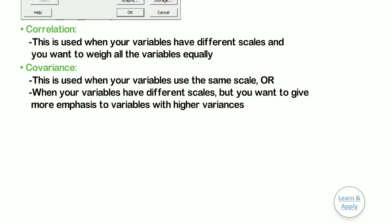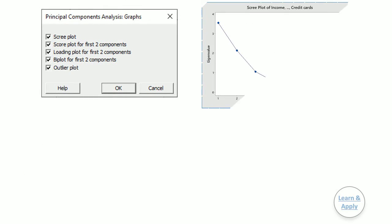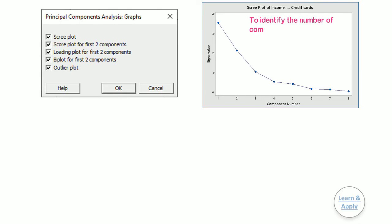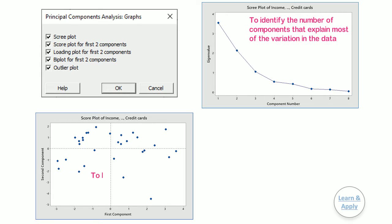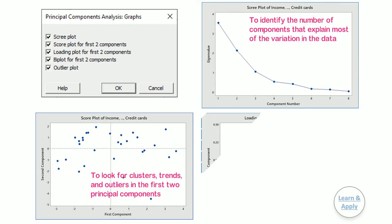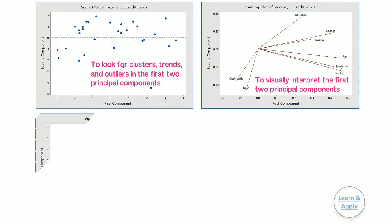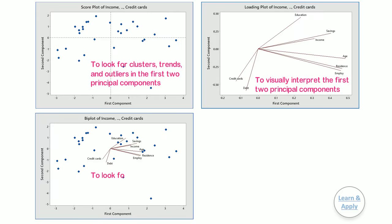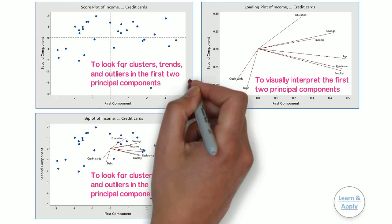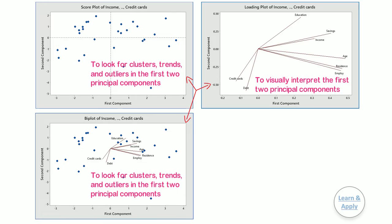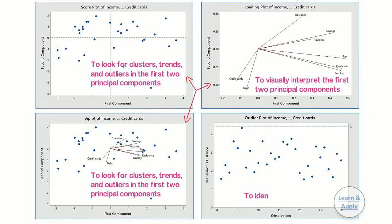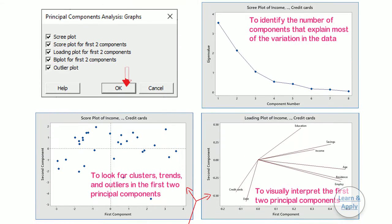Step 6: From the graphs, select the graphs you want to see for analysis. Scree plot: use a scree plot to identify the number of components that explain the most variation in the data. Score plot for the first two components: use the score plot to look for clusters, trends, and outliers in the first two principal components. Loading plot for the first two components: use the loading plot to visually interpret the first two principal components. Bi plot for the first two components: use the bi plot to look for clusters, trends, and outliers through interpretation of the first two principal components — the bi plot overlays the score plot and the loading plot on the same graph. Outlier plot: use the outlier plot to identify outliers in the data. Then click OK in each dialog box to get the results, which appear in the session window and graph window.